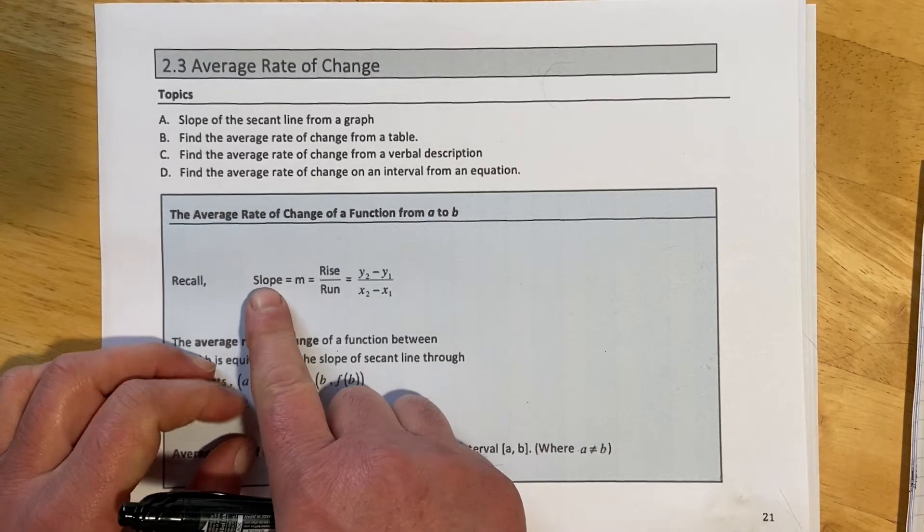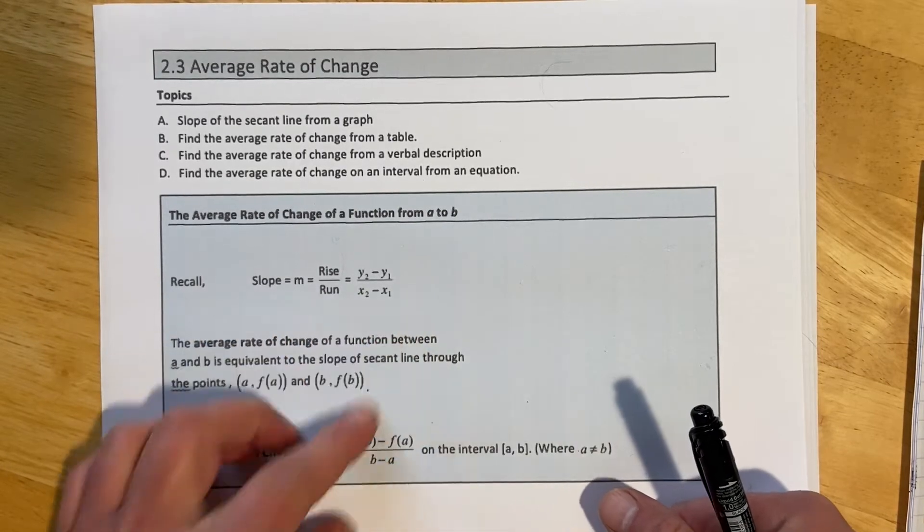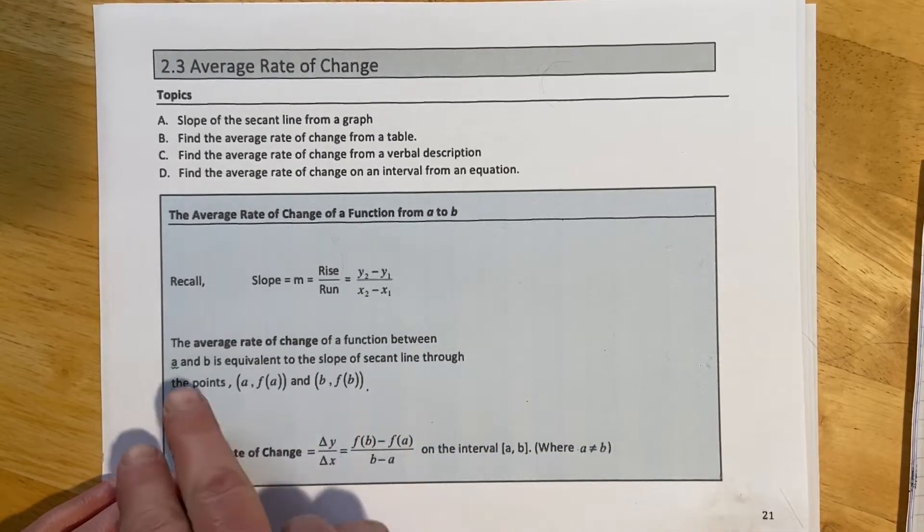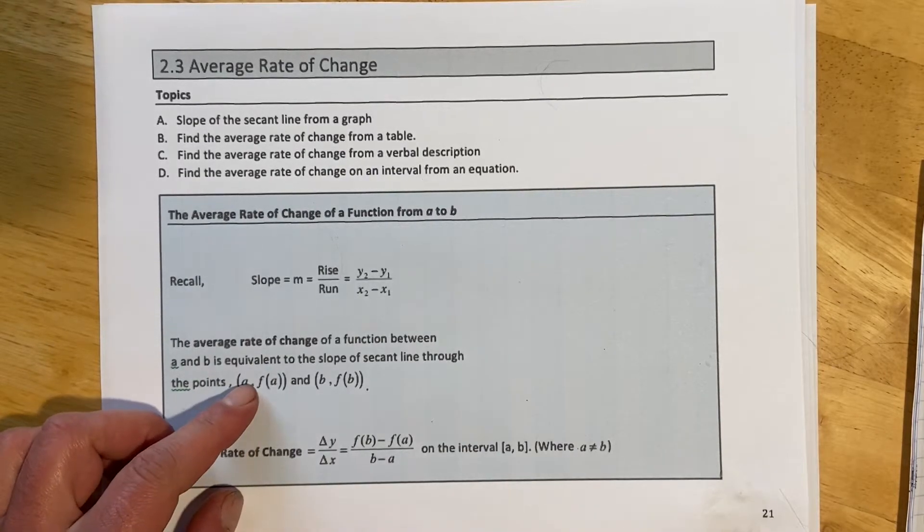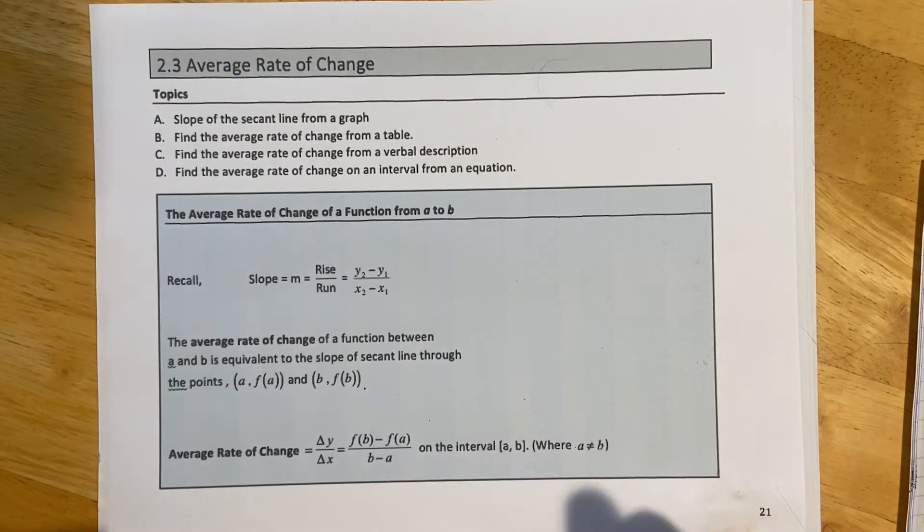So from 2.1, remember that we had slope of the line, rise over run, and then there's y2 minus y1 over x2 minus x1. The average rate of change of a function between two points A and B is going to be the equivalent of the same exact thing, the slope of a secant line through those points.